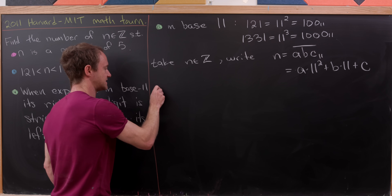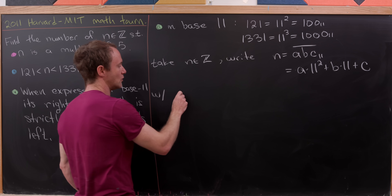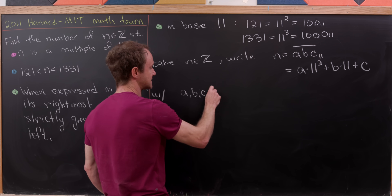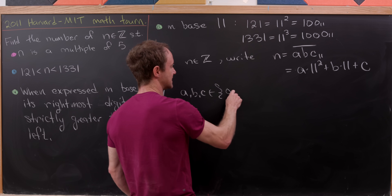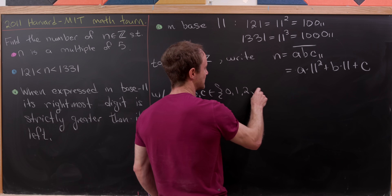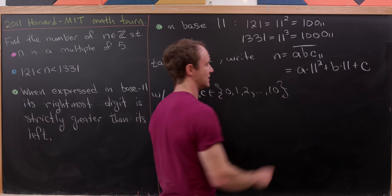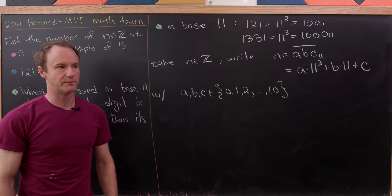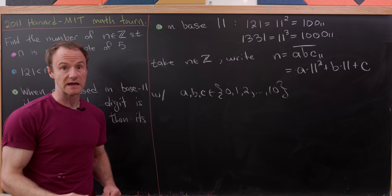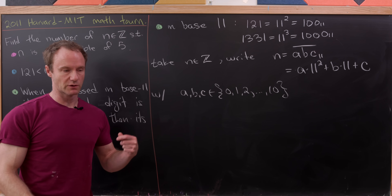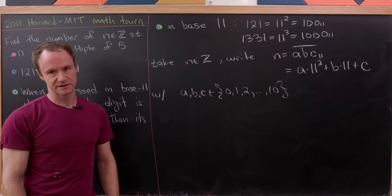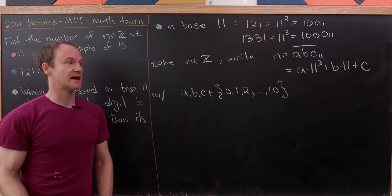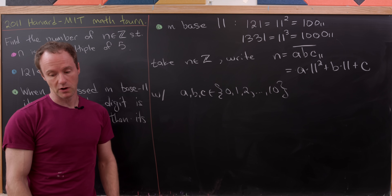Since we're in base eleven, the notation abc base eleven corresponds to a times eleven squared plus b times eleven plus c. Importantly, since we're in base eleven, the digits a, b, and c all come from the set {0, 1, 2, …, 10}. More generally, in base b the possible digits are 0 through b minus one — regularly in base ten our digits are 0 to 9.